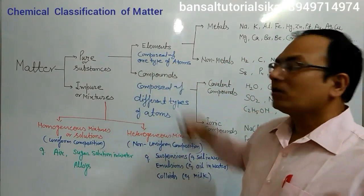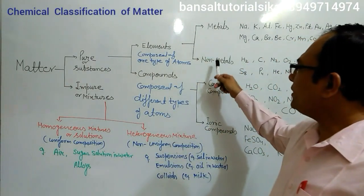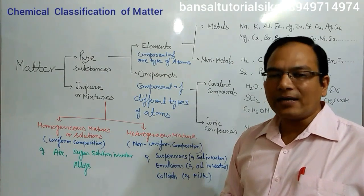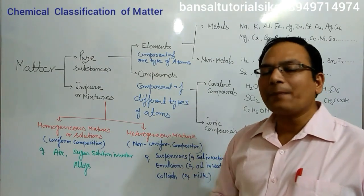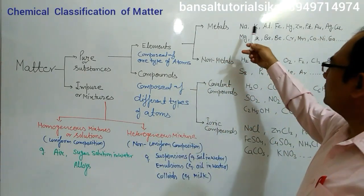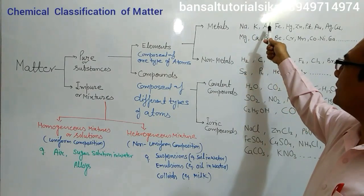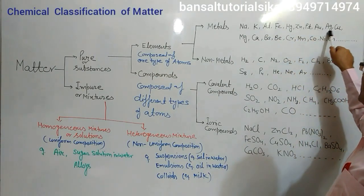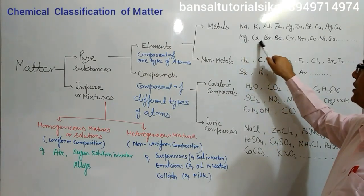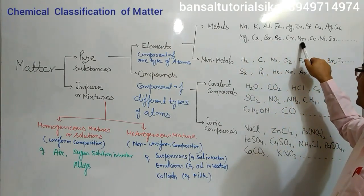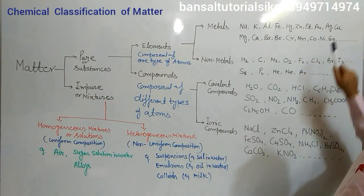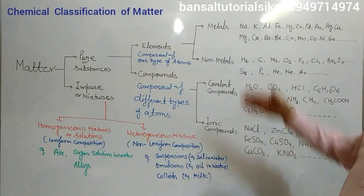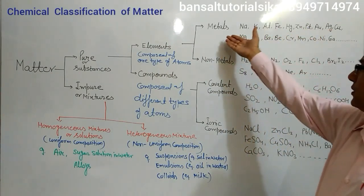Elements are again divided into metals and non-metals on the basis of their physical properties, which we will discuss later in Chapter 3, Metals and Non-metals. Examples of metals include sodium, potassium, aluminium, iron, mercury, zinc, platinum, gold, silver, copper, magnesium, calcium, barium, chromium, cobalt, nickel, and gallium. These all metals are composed of only one type of atom, and this is their chemical formula or symbolic representation.